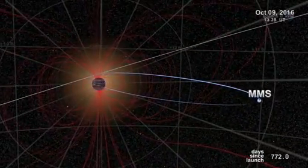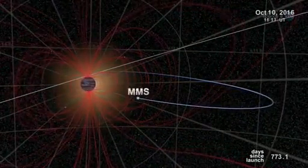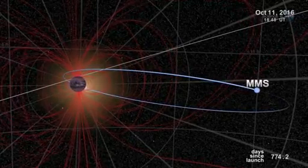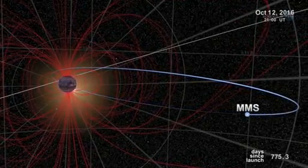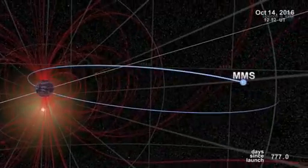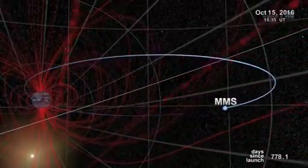Just one problem: finding them. Magnetic portals are invisible, unstable, and elusive. They open and close without warning, and there are no signposts to guide us in, notes Scudder.